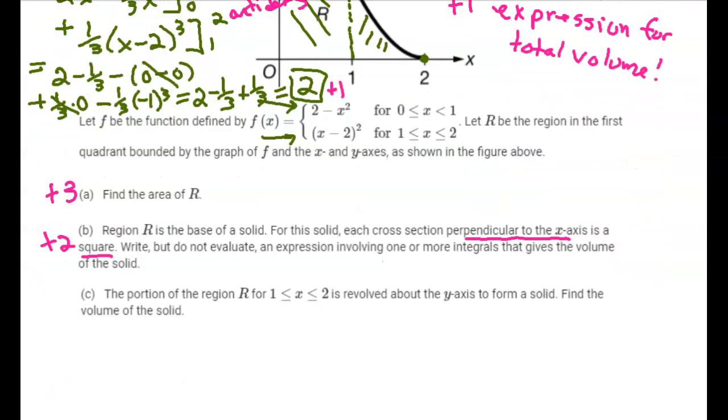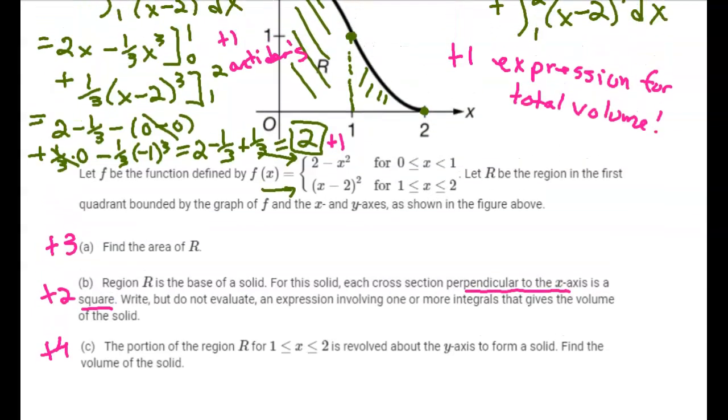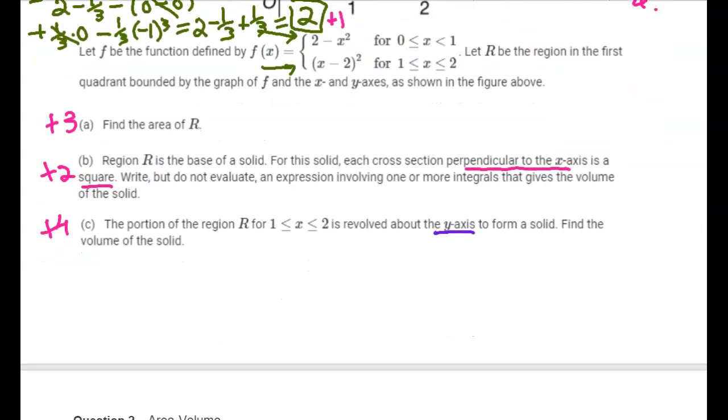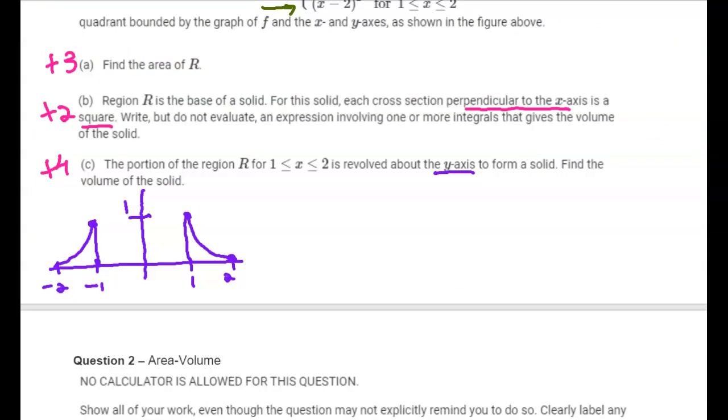Last part of this question is worth four points. Now we're going to start spinning. The portion of this region from x equals 1 to 2, we're going to take that and revolve it around the y-axis to form a solid. Make sure you're revolving around the y-axis. Imagine if I take that sliver and rotate it around the y-axis. We want the volume of that solid.